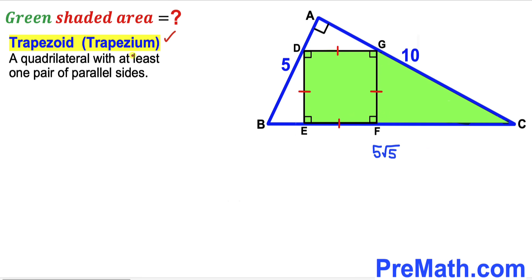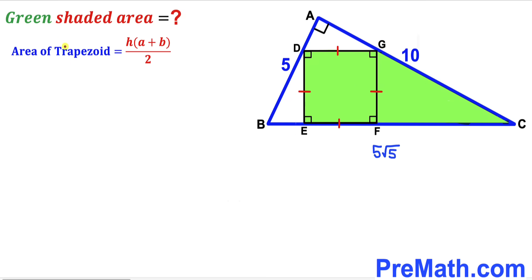Let's recall the definition of a trapezoid — sometimes called a trapezium — a quadrilateral with at least one pair of parallel sides. The green shaded region DECG is indeed a trapezoid. The area of a trapezoid is: Area = height h × (base a + base b) / 2. Here DE is the height, and DG and EC are the two bases.